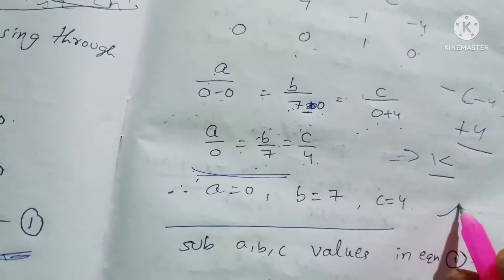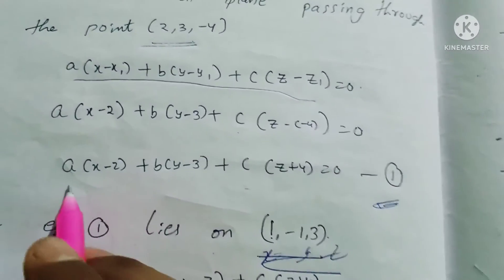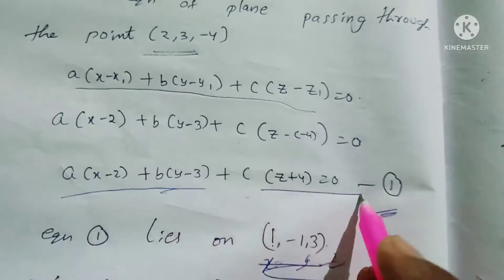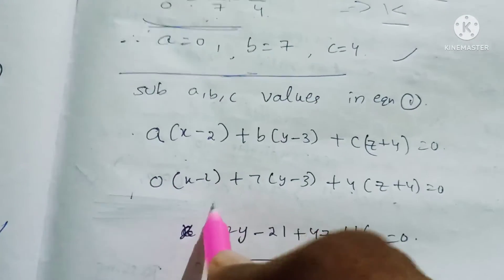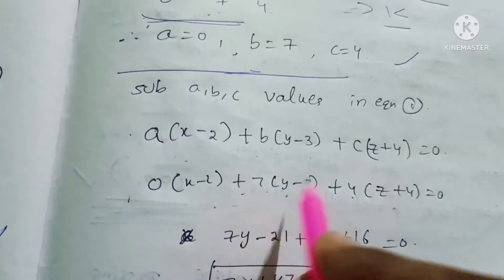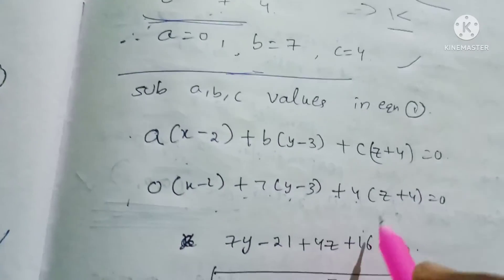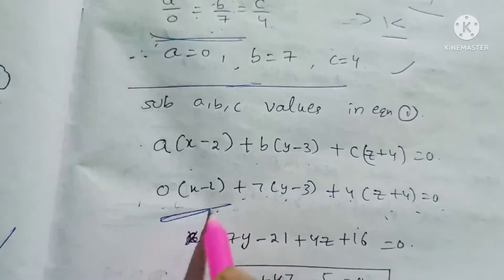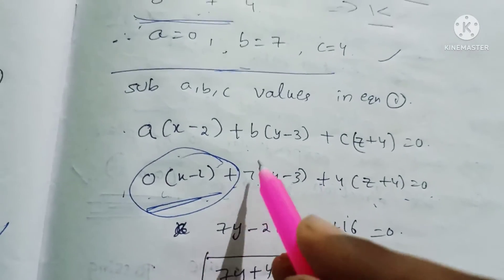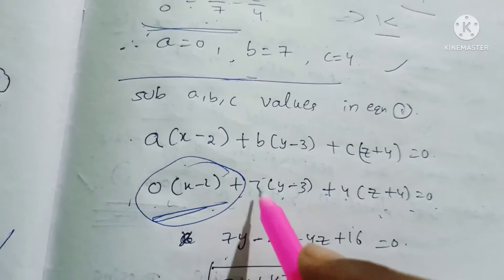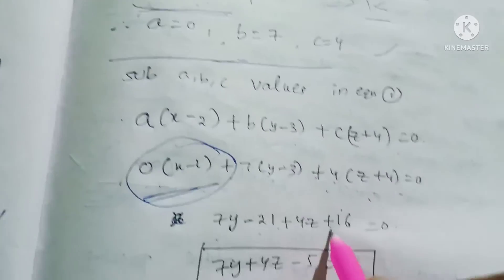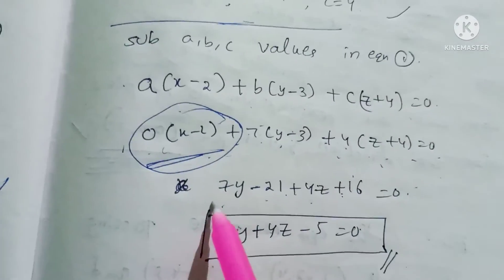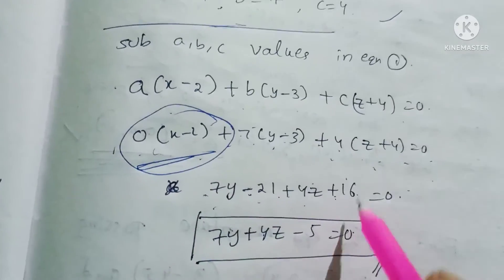Now we substitute a = 0, b = 7, c = 4 into the plane equation: 0·(x−2) + 7·(y−3) + 4·(z+4) = 0. The first term is 0, so: 7y − 21 + 4z + 16 = 0, giving 7y + 4z − 5 = 0. This is the required equation of the plane.